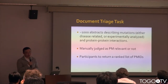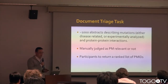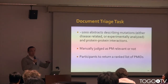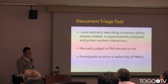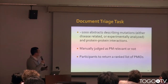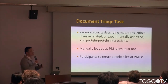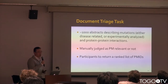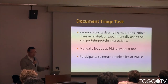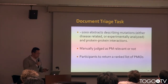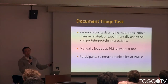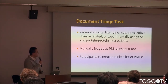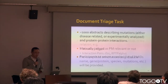For the first document triage task, we are essentially giving teams about 1,000 paper abstracts — we're not ready to move into full text yet. These abstracts will describe mutations and will be manually annotated by database curators as to whether they are relevant to precision medicine or not. Systems will then be required to rank a new set of documents based on a confidence score of relevance.